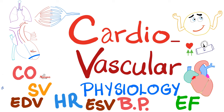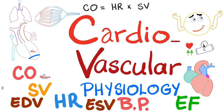Similarly, you can calculate the cardiac output by multiplying how fast the heart is pumping — i.e. beats per minute — times the volume ejected per beat.